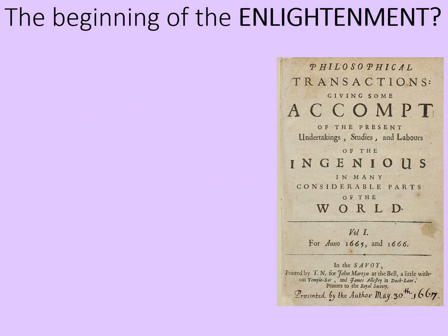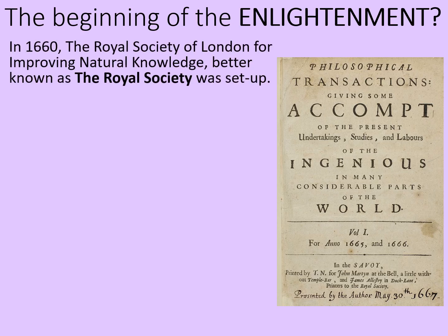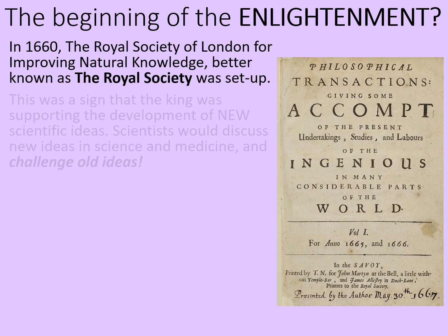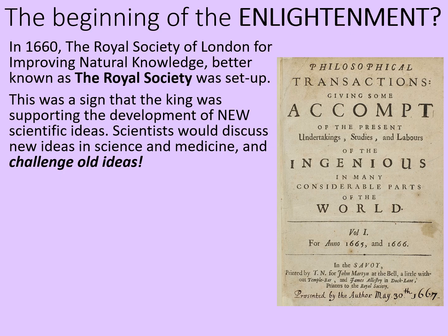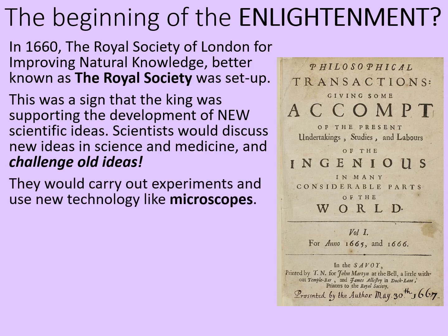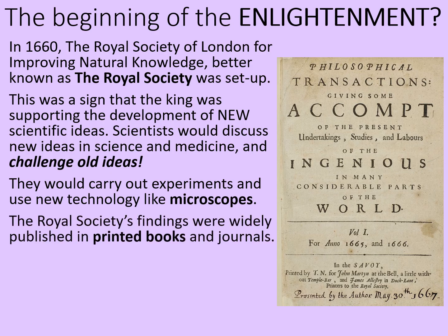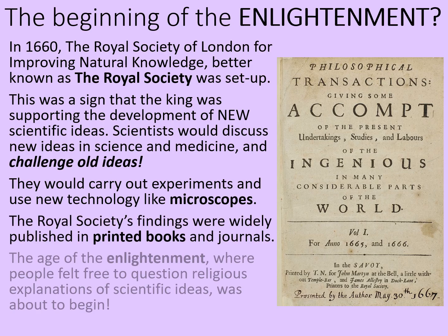Sydenham's work can be seen as part of the early part of what we now call the Enlightenment, so it's worth a brief mention. In 1660, the Royal Society of London for Improving Natural Knowledge, better known as the Royal Society, was set up. This was a sign that the King was supporting the development of new scientific ideas, hence why it was called the Royal Society rather than just the Society of London. Scientists would discuss new ideas in science and medicine, and more importantly, they would challenge the old ideas. They would carry out experiments and use new technology like microscopes. The Royal Society's findings were widely published in printed books and journals. The age of the Enlightenment, where people felt free to question religious explanations about scientific ideas, was about to begin.